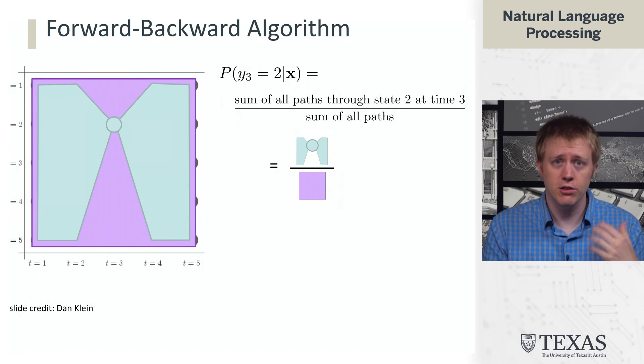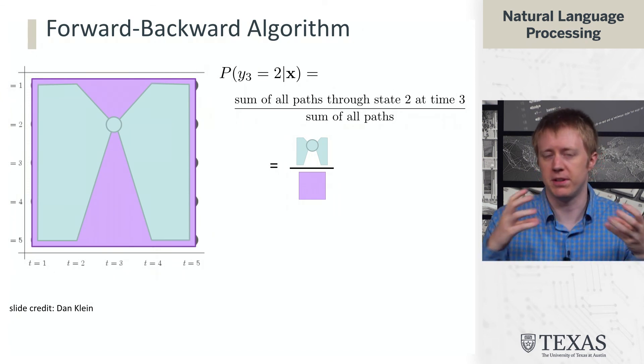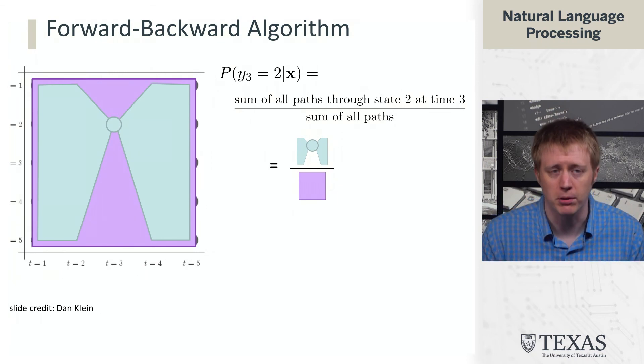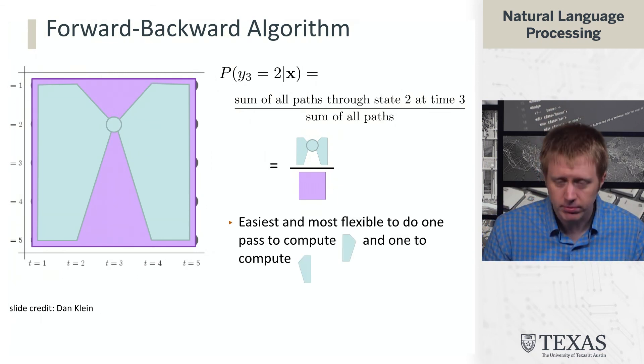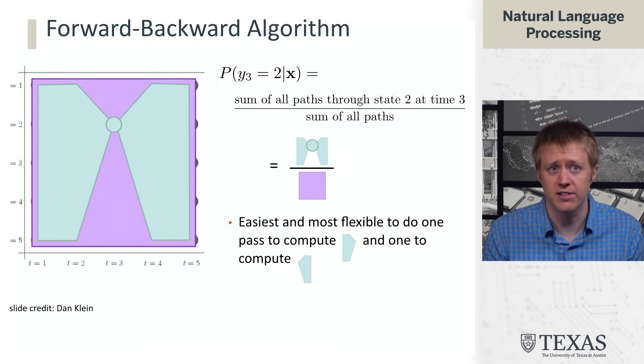And what this is going to allow us to do is it'll allow us to actually turn these unnormalized potential factors into this probability that we need. And so the way that we're going to do this is by having one dynamic programming pass that computes this first chunk, that's the forward pass, and a second that computes the second chunk, that's the backward pass.